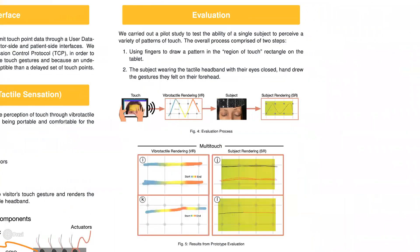We initially carried out a pilot study to test the ability of a single subject to perceive various touch patterns. This overall process comprised of two steps. First, we drew different patterns on the visitor's side tablet and the subject wearing the headband would receive these touch gestures, close their eyes, and hand draw the gesture that they felt on their forehead. As you can see here, the subject appeared to correctly recognize the different touch patterns.